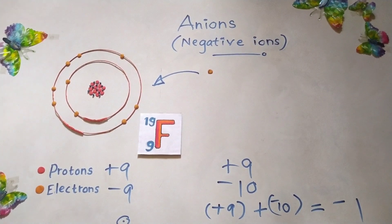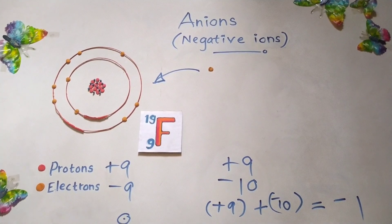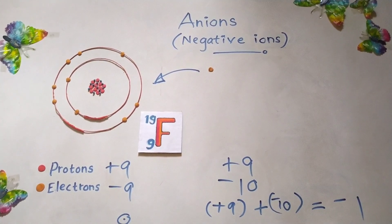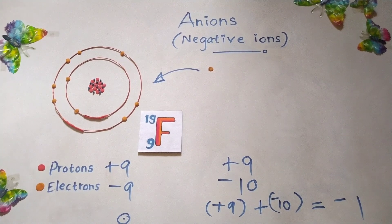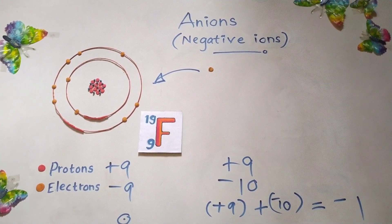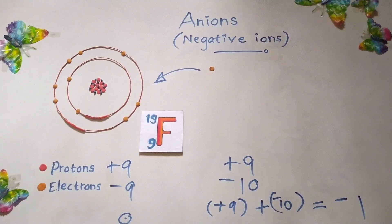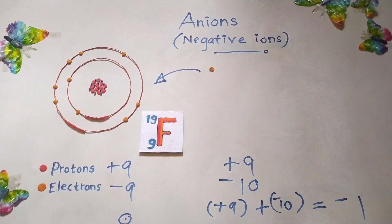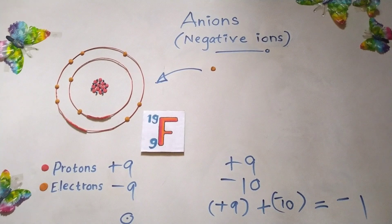Now you can see — when the fluorine atom has gained one electron from the outside, it has converted to a negative ion, or an anion. So when any neutral atom gains electrons, it is being converted to an anion.